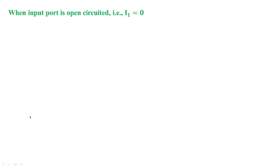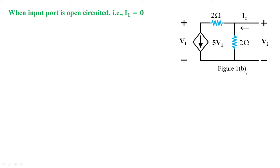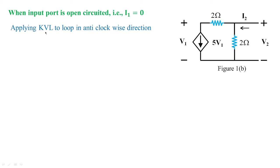Now when the input port is open-circuited, we set i1 = 0. Figure 1 changes to figure 1b: i1 = 0, v1 is the voltage across the voltage-dependent current source (5·v1), and i2 flows into the circuit due to v2. From the standard equations we now find h12 and h22. Applying KVL in the anti-clockwise direction for the loop, the current flowing is i2.